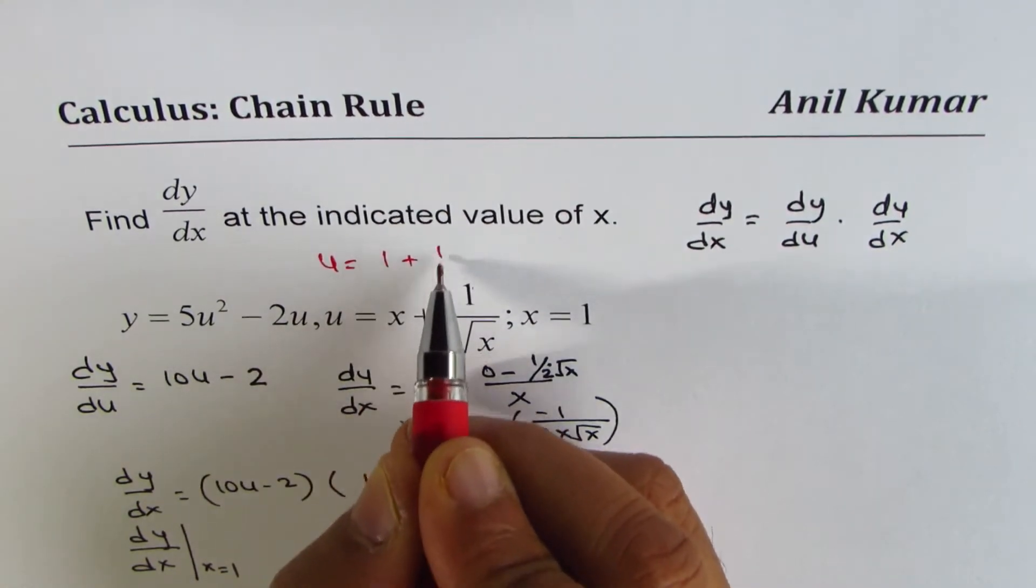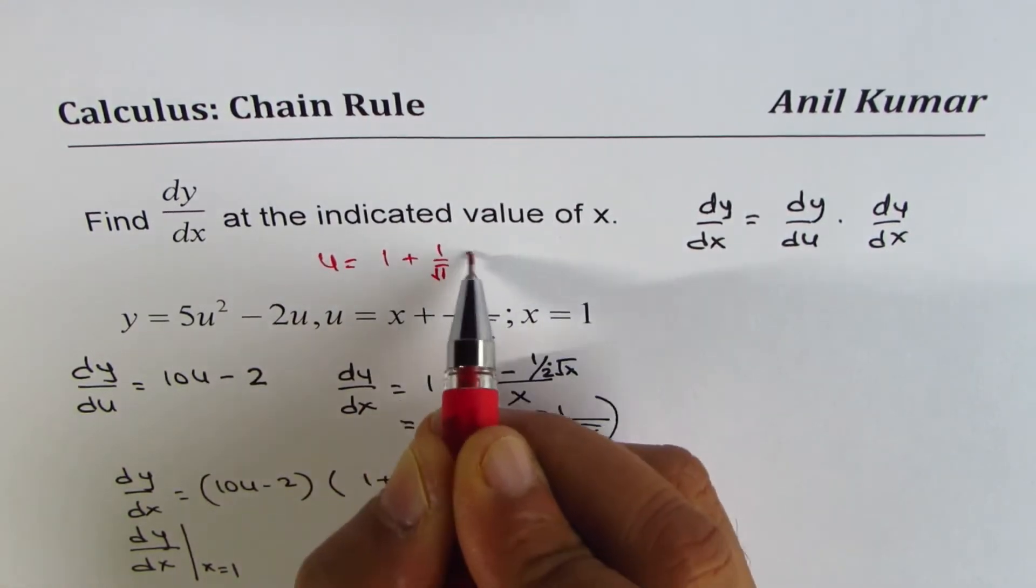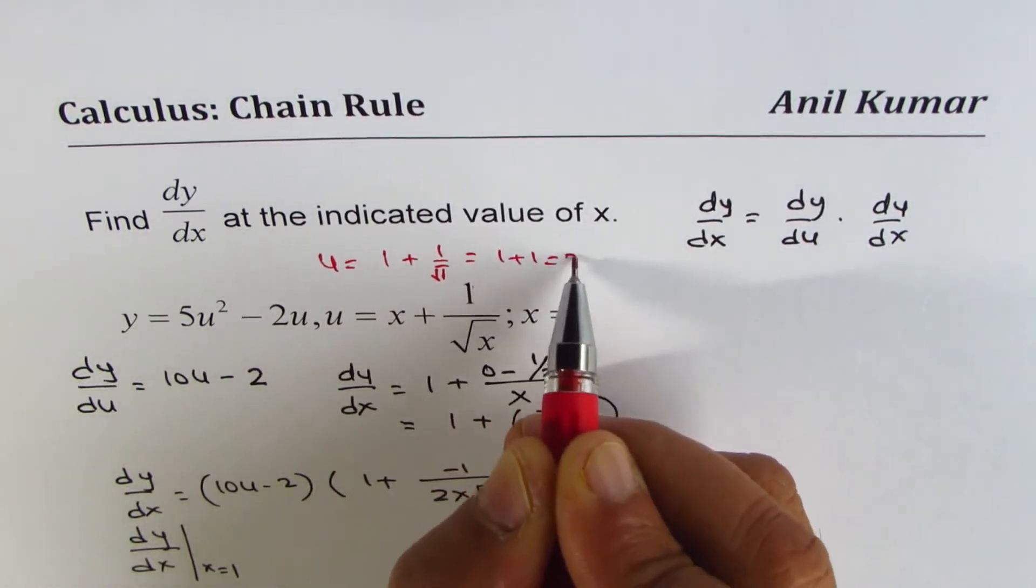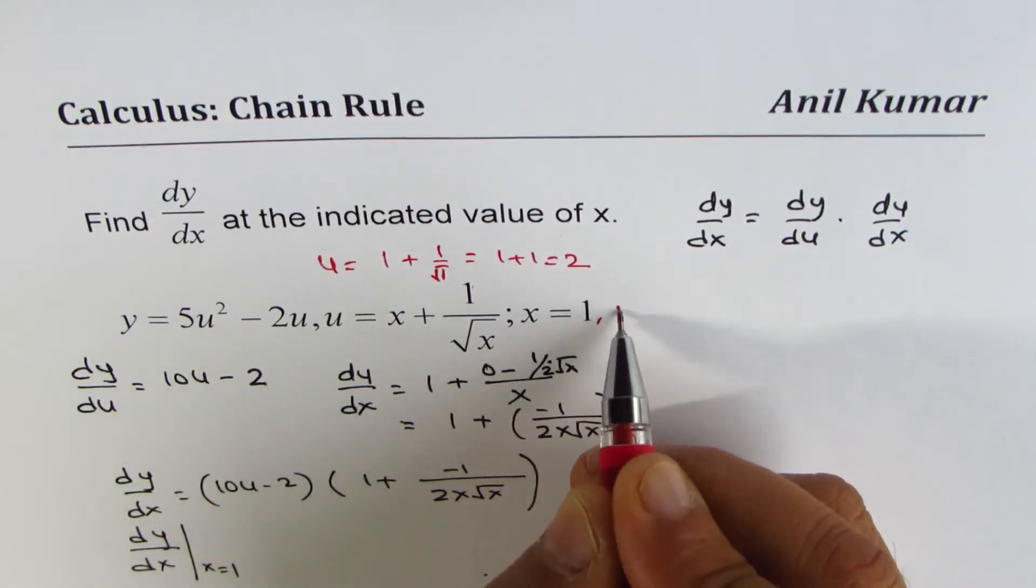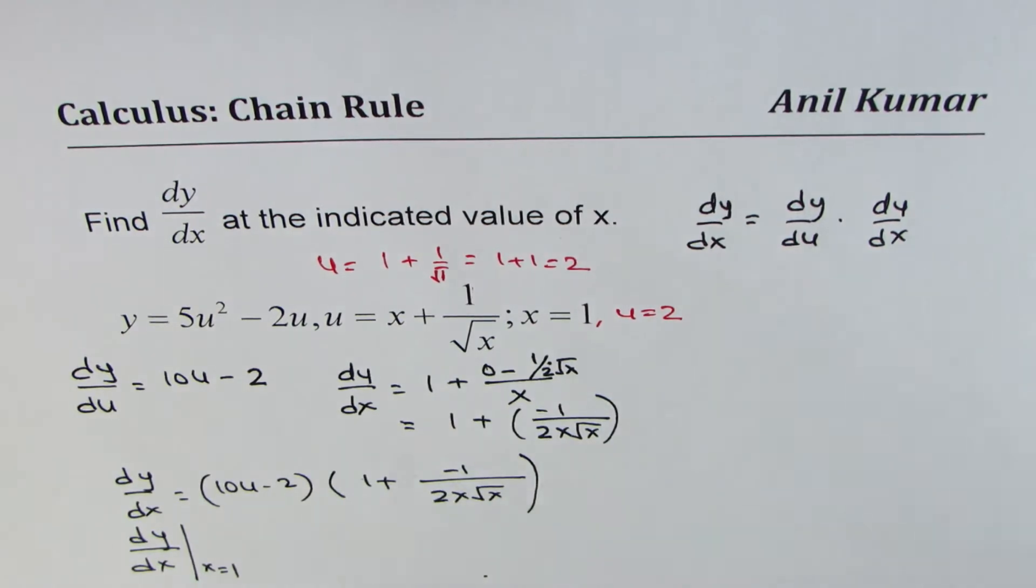We can write this as 1 plus 1 over square root of 1, which is 1 plus 1, which is 2. So at x equals 1, u equals 2. So we'll substitute this value of 2 in our equation.